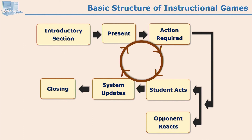Whenever goals are achieved, there is a reward and closing. Here you can summarize what the learner has done — for example, rate of the learner, accuracy, and rewards won. An entire summary can be presented, and then replay facility can be given. Along with game system updates, new levels can be presented and new actions required. The learner goes on playing level 1, level 2, level 3, and the system keeps updating before actual closure. This is the basic structure of any instructional game.